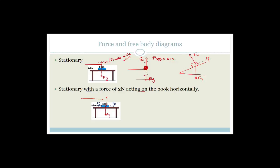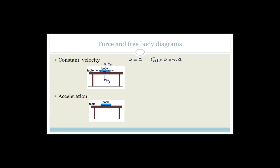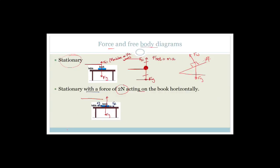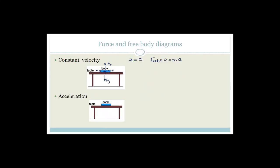In the last lesson, we were talking about force and free body diagrams. We discussed stationary forces — stationary with a force of two Newtons acting on a book horizontally. We also spoke about constant velocity and the forces involved. Since it's stationary, all the forces balance each other out. The only forces are the force down due to gravity and the normal force holding the book up. There was a force of two Newtons acting horizontally, and if it was stationary, there had to be a force of friction. Similarly, at constant velocity, there must also be a force of friction.